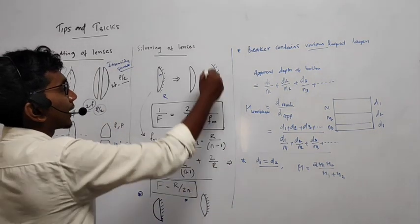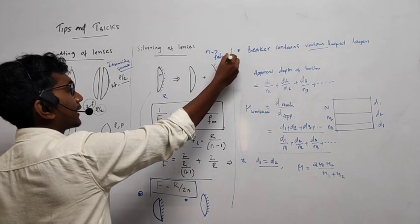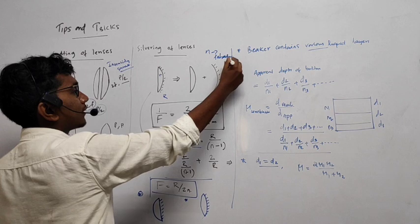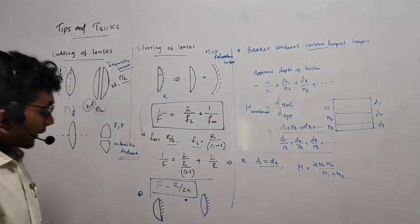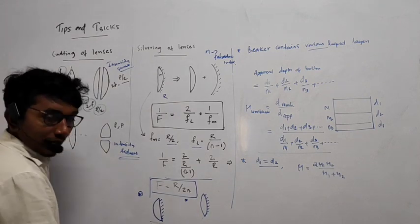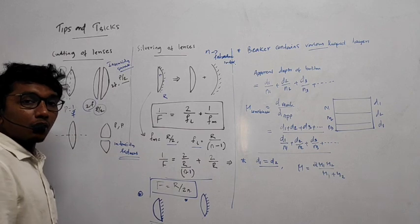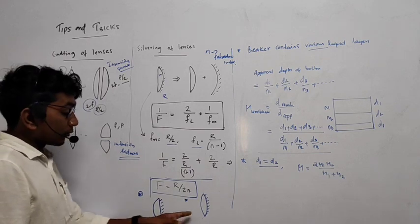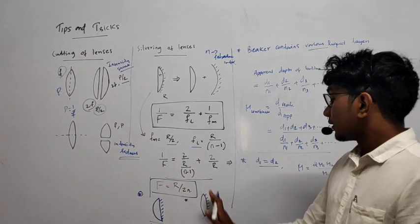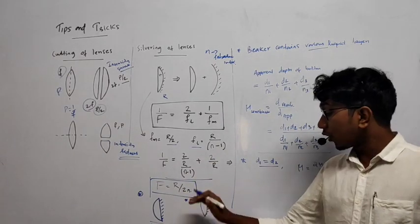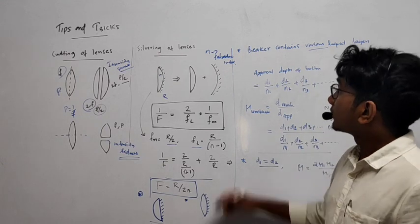Substituting both values into the combination formula, the answer comes out to f = r/(2n), where n is the refractive index. We can use either mu or n for refractive index — I'll use n.